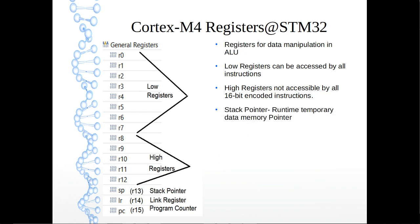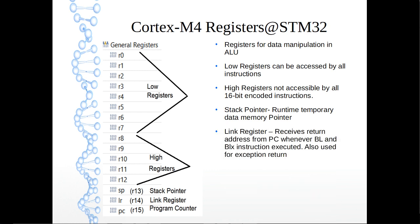The stack pointer is basically the runtime temporary data memory pointer. The stack is used to store temporary variables or parameters passed between functions. The link register, whenever a BL or BLX instruction executes, receives the return address from the PC. It saves the return address and is also used in exception return — when the link register is set with a certain address, returning from the exception branches to that particular address.